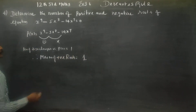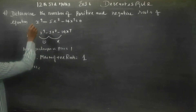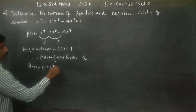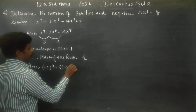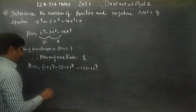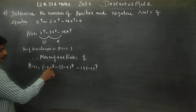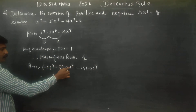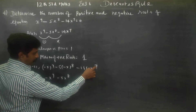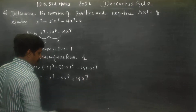Now consider p of minus x. I am going to substitute minus x. Therefore: minus x whole power 9, minus 5 times minus x whole power 8, minus 14 times minus x whole power 7. You will be getting minus x power 9 — because odd power — then minus 5x power 8 — because even power — and plus 14x power 7 — because odd power.